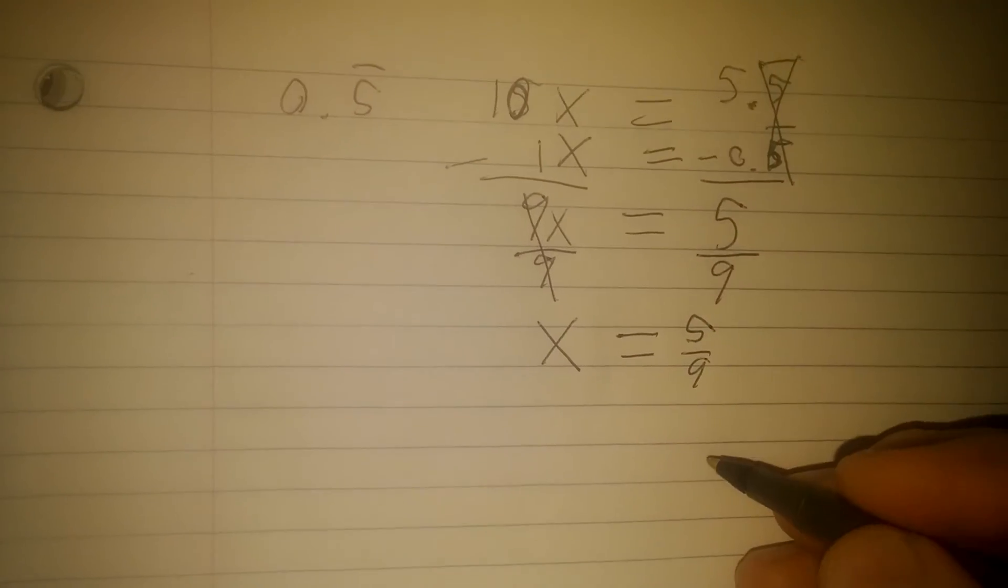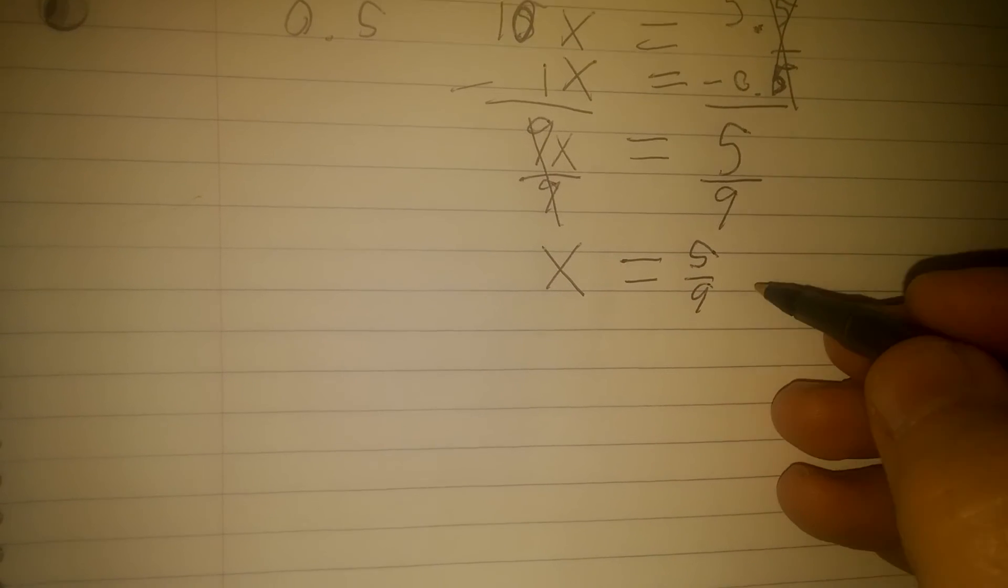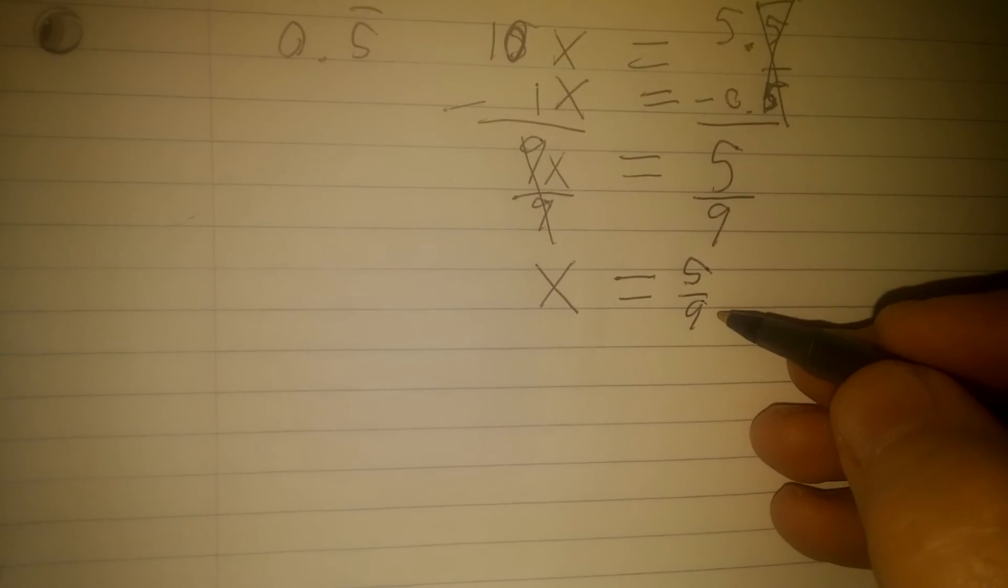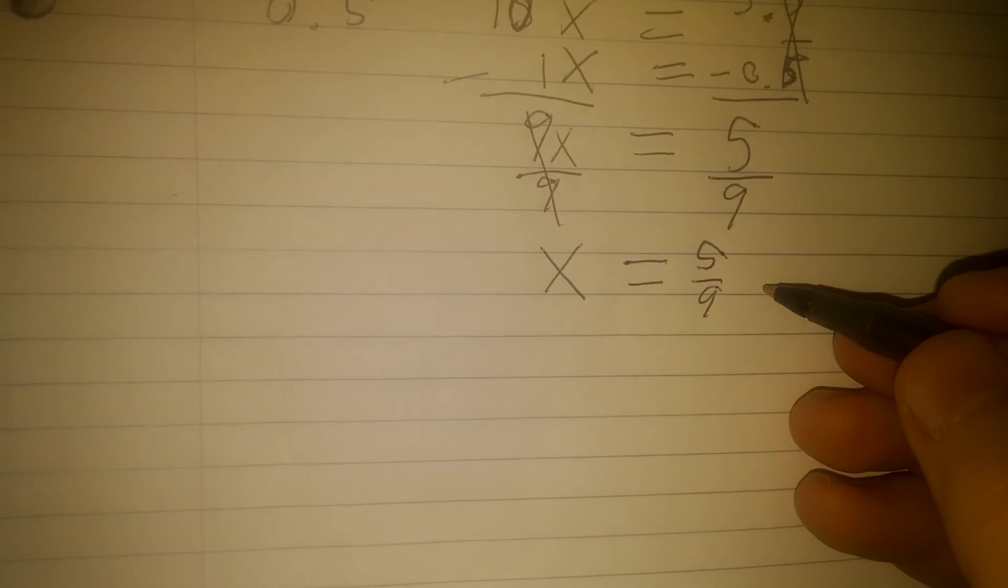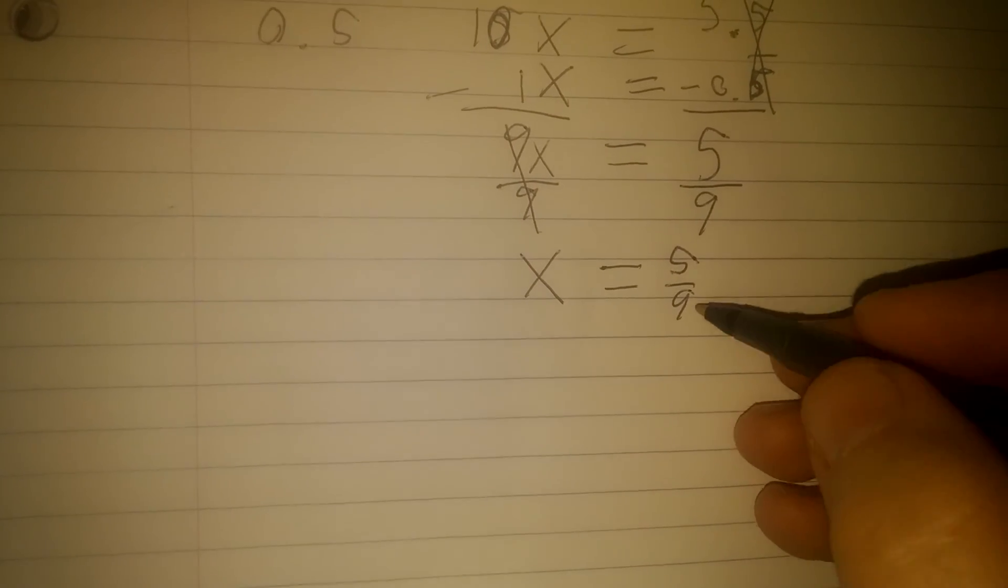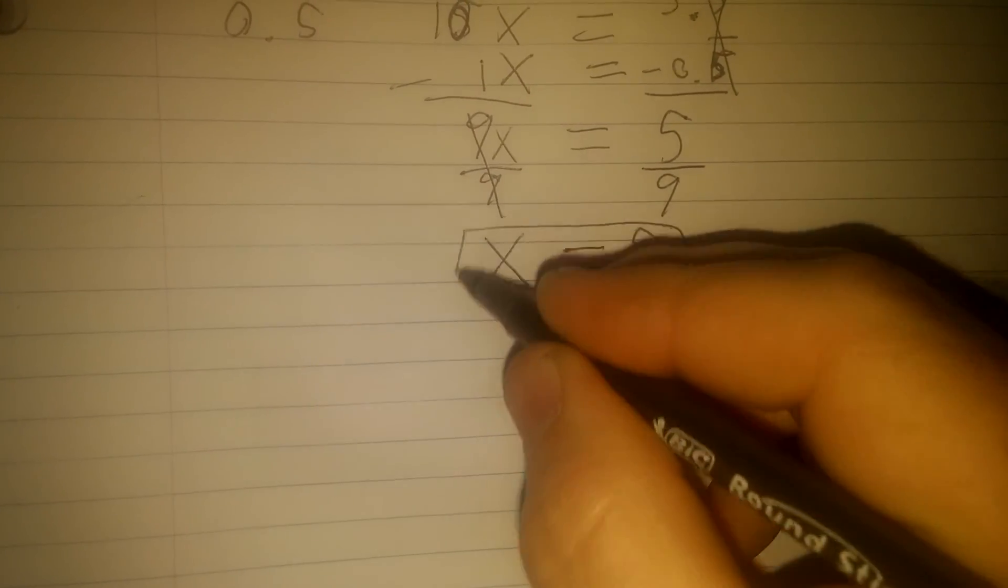The only other thing I need to check out is if I can reduce this fraction. Now 5 and 9 do not share any common factors other than 1, so I'm good. And that is my answer.